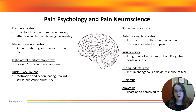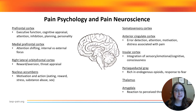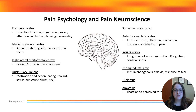Starting with the larger prefrontal cortex, we have a region involved in executive function, deliberate attention, cognitive appraisal, planning, and inhibition — all important elements in pain processing. Activity in the prefrontal cortex is associated with internal modulation of pain or perceived pain intensity, and the cortical projections to the periaqueductal gray largely originate from the prefrontal cortex.